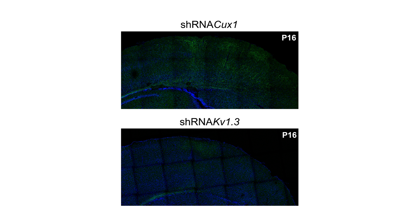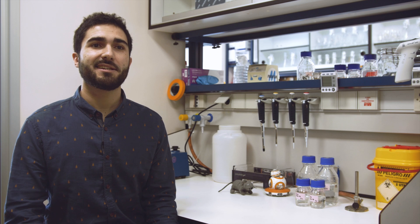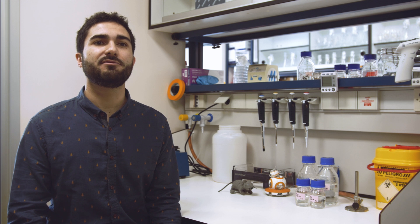Furthermore, knocking down KV1 expression in wild-type neurons eliminated contralateral axons, which reproduced the CACS1 knockdown phenotype. These experiments confirm that control of the firing response by KV1 channels is required for innervation once the callosal axon invades the cortical plate.